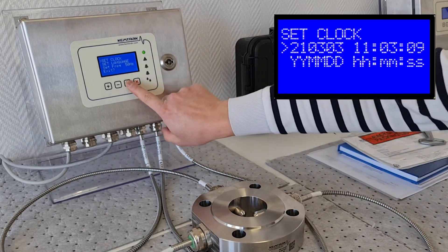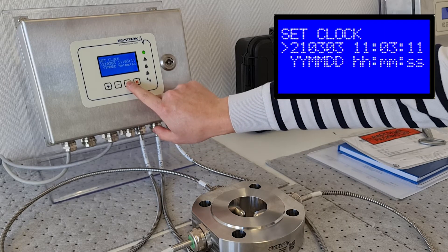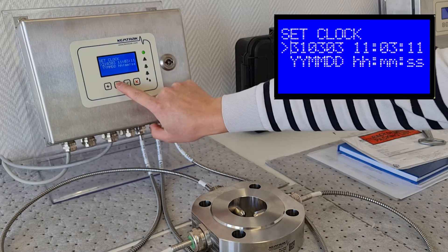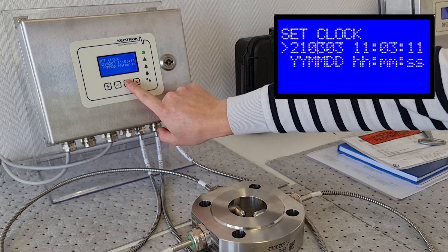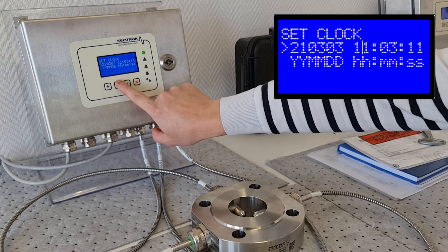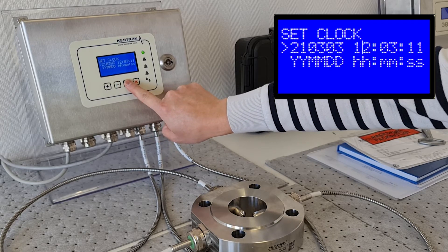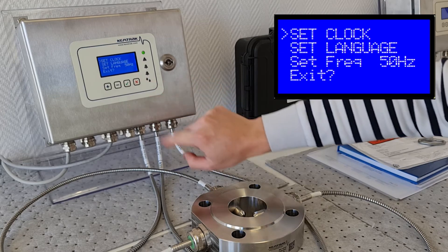Start by entering the date and time. Use the plus and minus keys to adjust the values. Tick to go to the next value. Then press tick for two seconds to confirm and return.